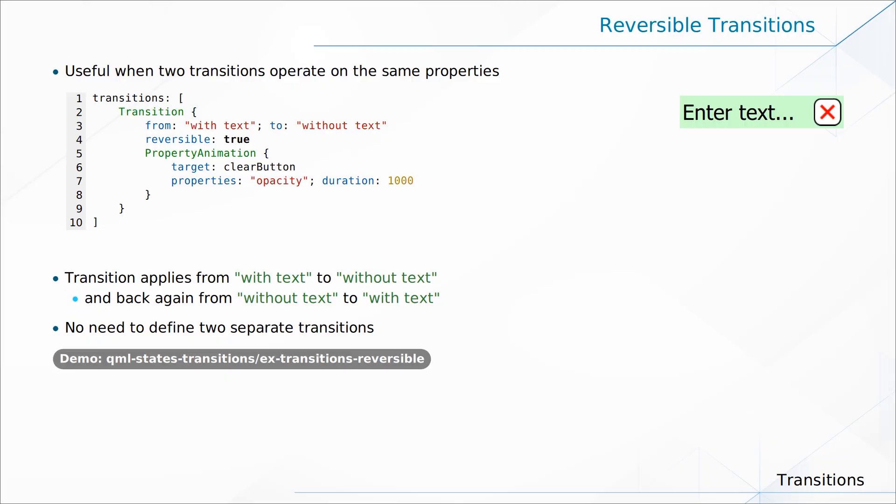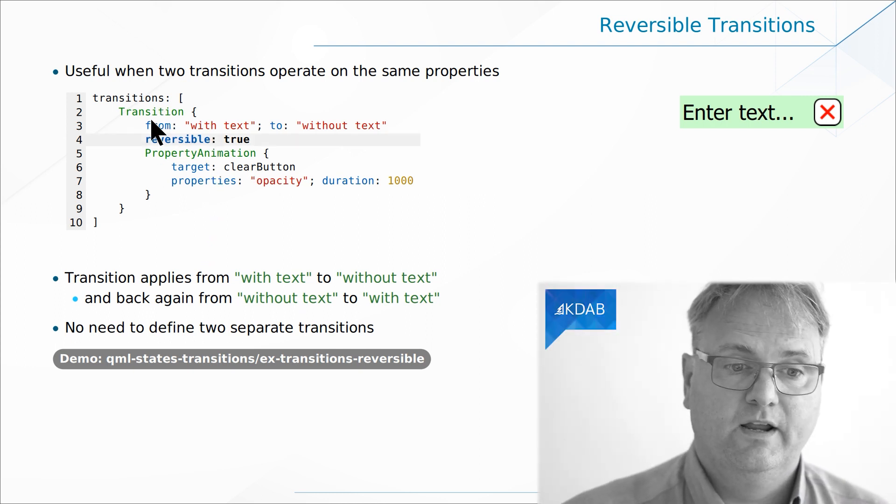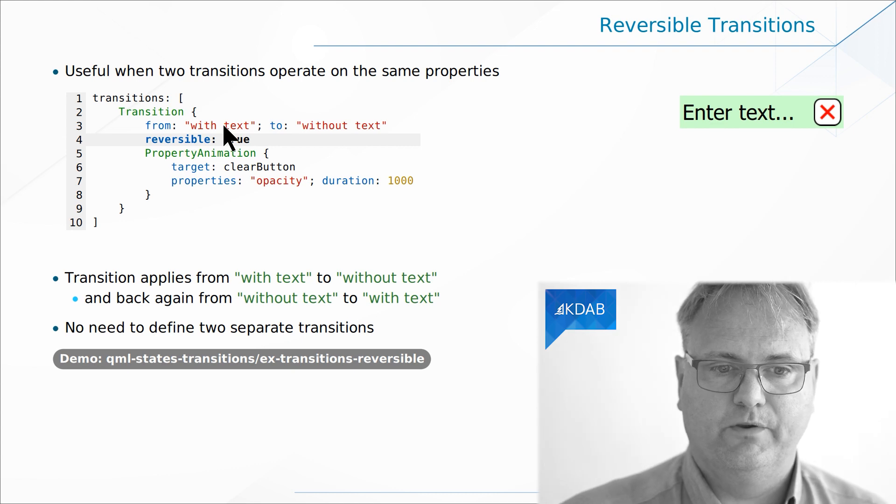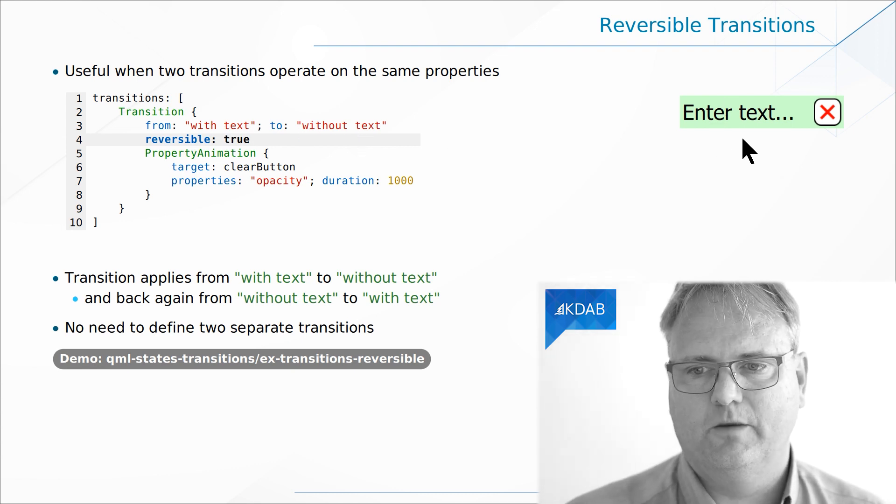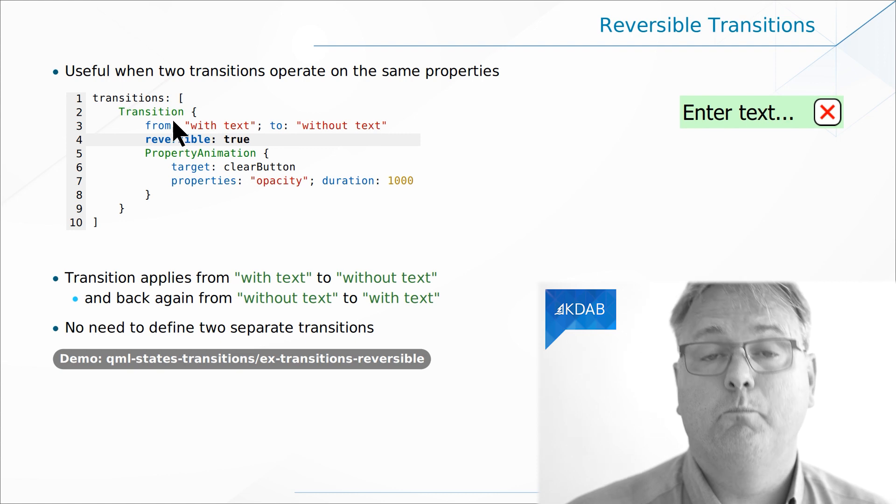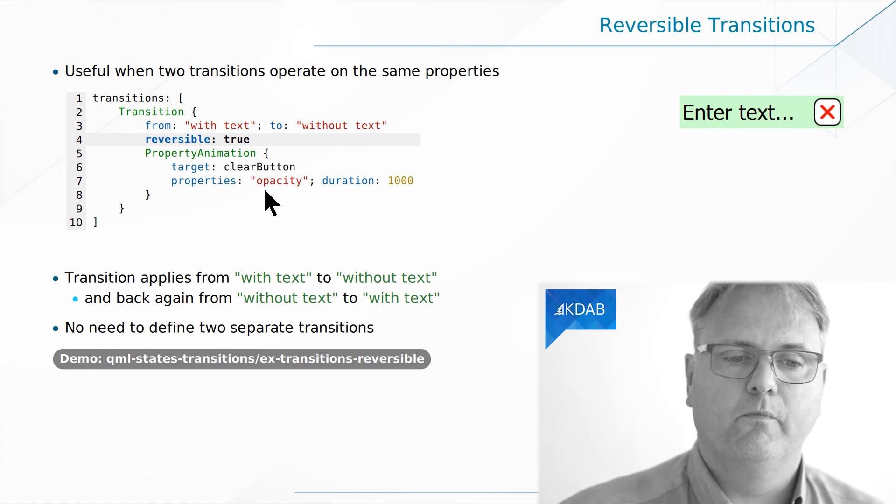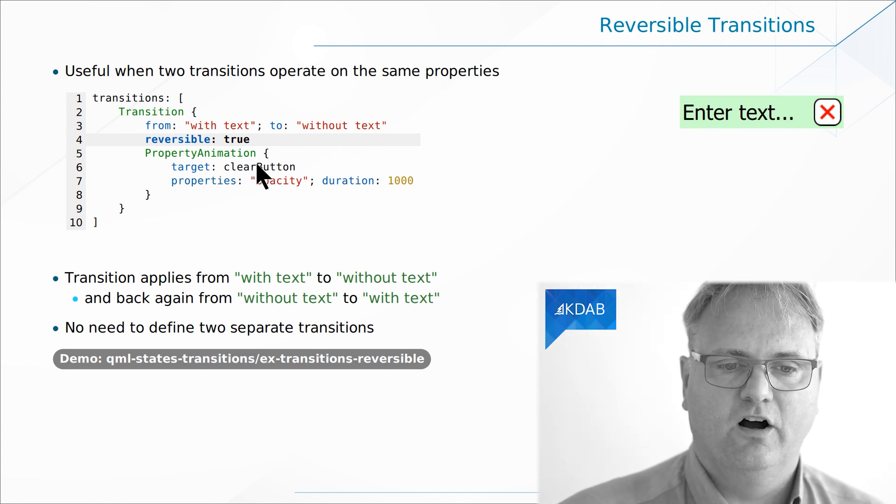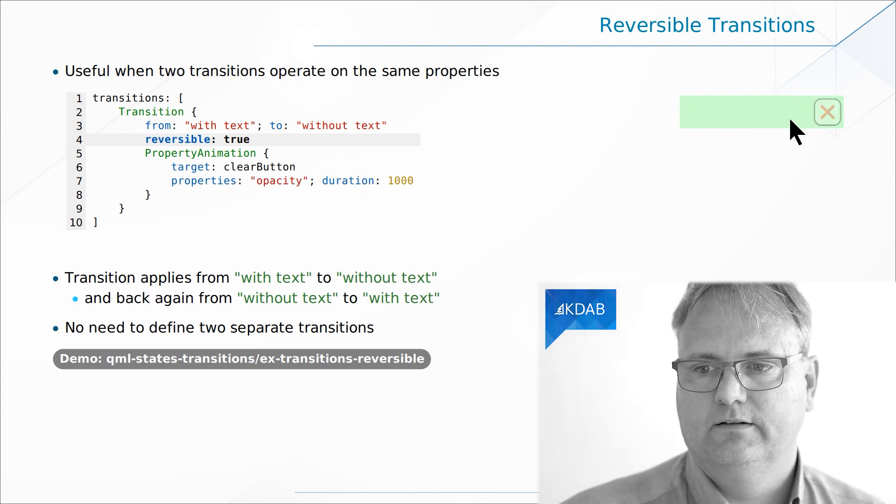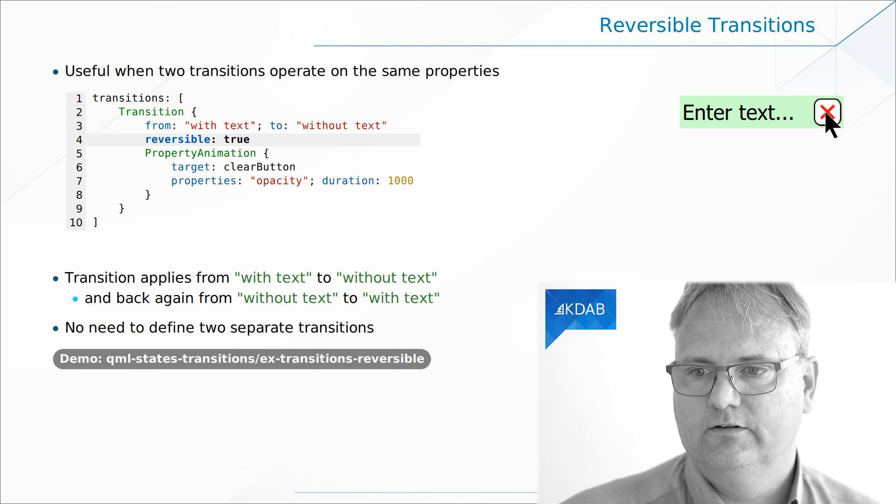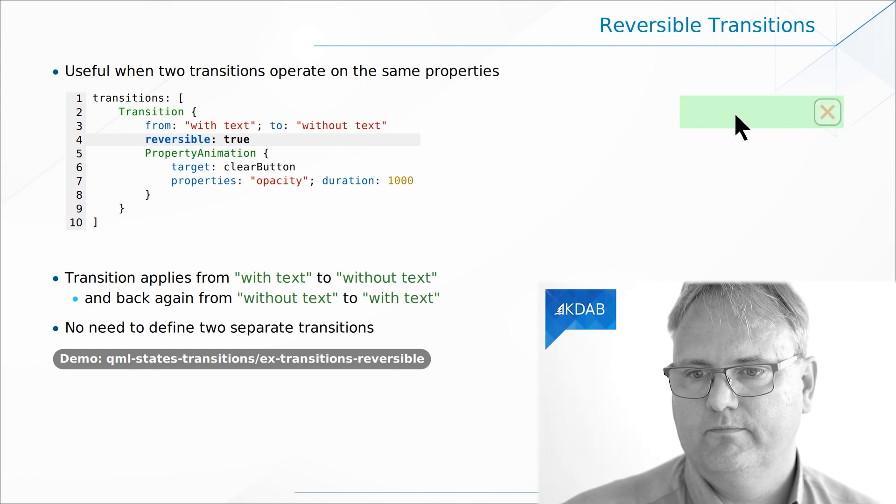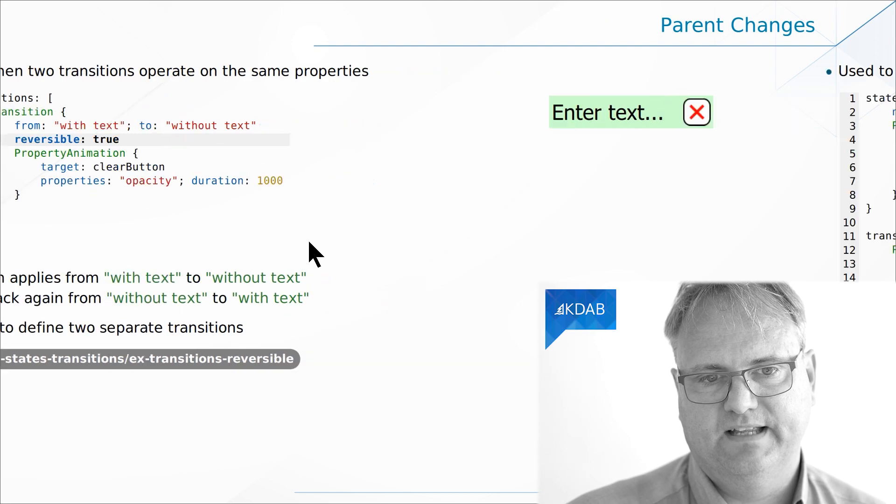Sometimes you do have different transitions for different parts of your state hierarchy, but you can go forth and back between two states. And when you do that, you want the same transition. And in that case, we have this reversible property that we can set on the transition. So I explicitly want to go from the with text to the without text in this particular setup. And it's both directions. I should animate the opacity of my clear button for a second. So see how it goes away. Yeah, that's it.